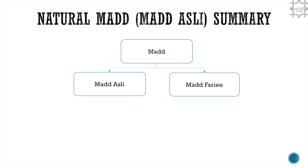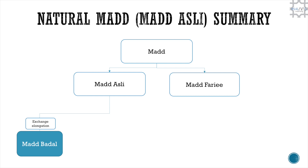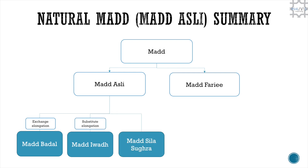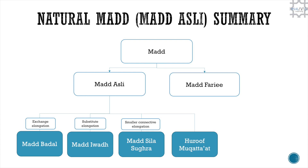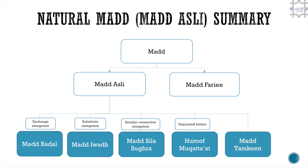To summarize, mad consists of two branches: mad asli and mad fara'i. We have just looked at the five branches of mad asli. Number 1: Mad badal, which means exchange elongation. Number 2: Mad iwad, which means substitute elongation. Number 3: Mad sila sugra, which means smaller connective elongation. Number 4: Huruf muqatta'at, which means disjointed letters. And number 5: Mad tamkeen, which means confirming elongation.